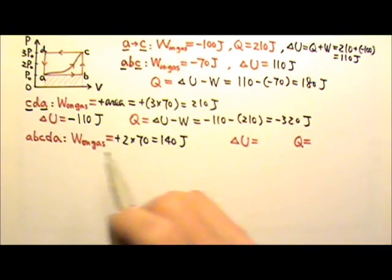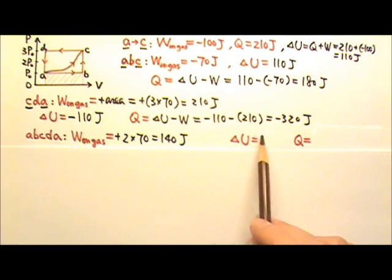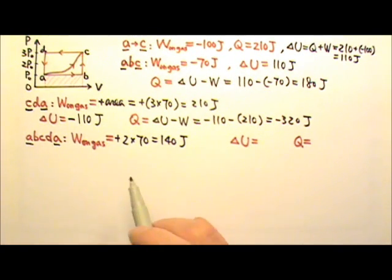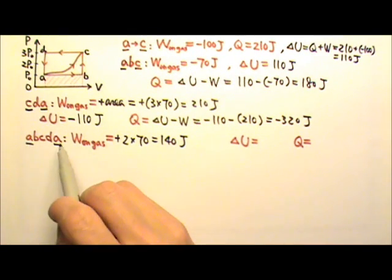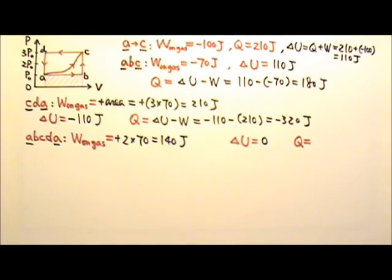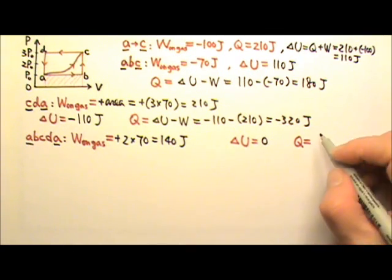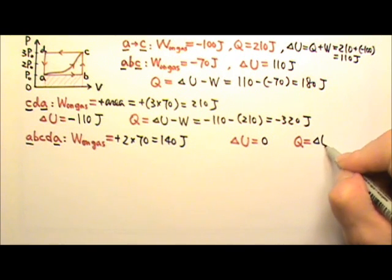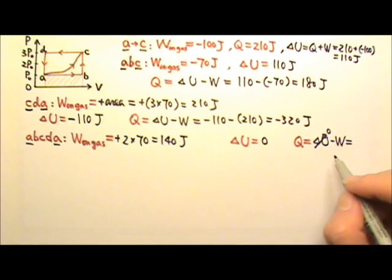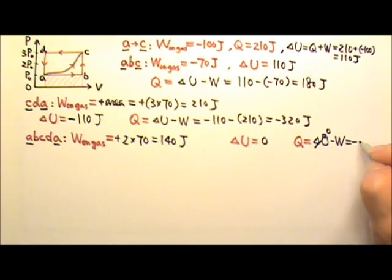What about delta U for the cyclic process? You start on A and end on A, so delta U is UA minus UA, which is 0. Then Q equals delta U minus W. When delta U is 0, Q equals negative W, which is negative 140 joules.